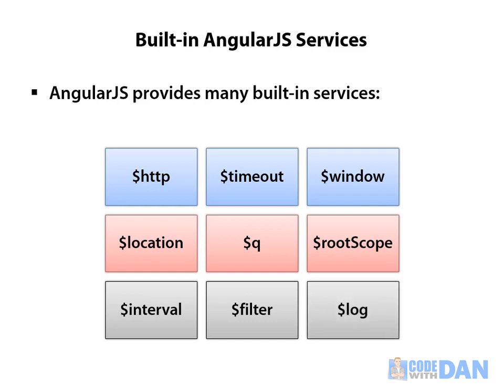And then finally, $log kind of does what it says — you can use this for general logging purposes. This isn't all of the services by any means, but these are a few of the key ones you might encounter, and we'll talk about a few of these throughout the module. Now that we've looked at some of the fundamental concepts of services and factories — the fact that they're singletons and what they're used for — let's dive into how we get started creating and using these.